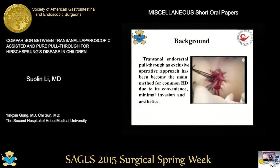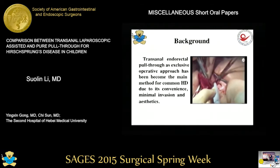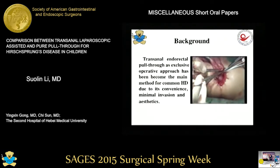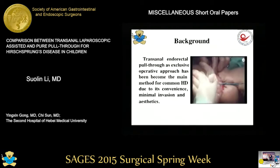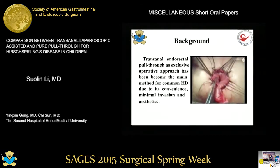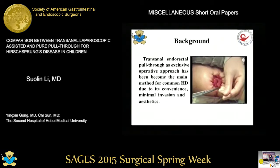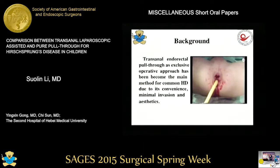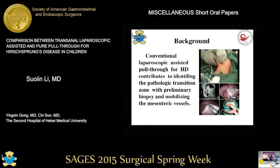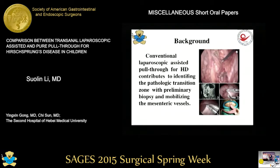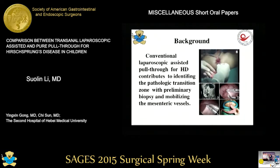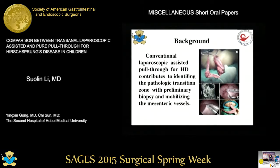Primary transanal endorectal pull through was first reported by De la Torre in 1998 as an exclusive transanal approach. TAPT has become the main method for common Hirschsprung's disease due to its convenience, minimally invasive nature, and aesthetics. Laparoscopic assisted Soave procedure for HD was first described by Georgeson in 1995. Conventional laparoscopy for HD contributes to identifying the pathologic transitional zone with preliminary biopsy and mobilizing the mesenteric vessels.